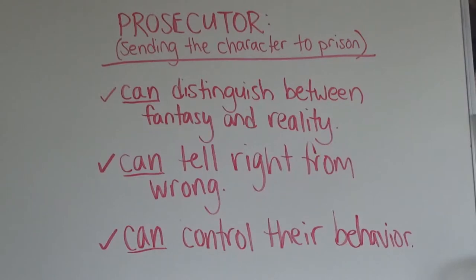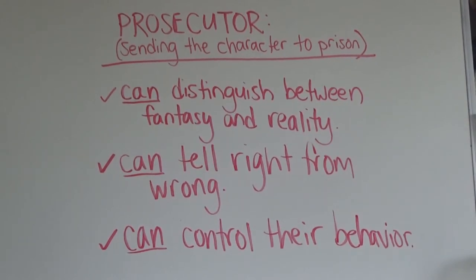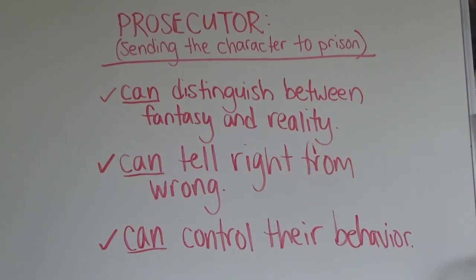Let me break these instructions down a little bit more to show you exactly what I mean. This is all written down in your instructions but I just wanted to go over it quickly to make sure you understand what I'm asking of you. If you decide that you want to be the prosecutor, that means you are sending the character you're writing about to prison. In order to do that you need to convince the jury of three things: number one, that the character can distinguish between fantasy and reality; number two, that the character can tell right from wrong; and number three, that they can control their behavior.